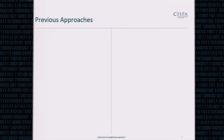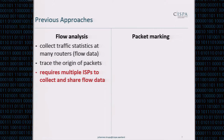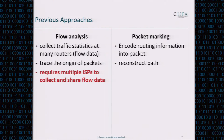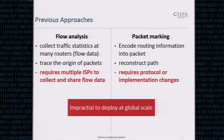There have been some previous approaches to finding the origin of spoofed traffic, falling mainly into two categories: flow analysis and packet marking. Flow analysis collects traffic statistics at many routers to trace back packet origins, but requires multiple ISPs to collaborate and share flow data, which is not happening today. Packet marking encodes routing information into packets to reconstruct the path, but requires changing fundamental protocols or router implementations, which also has not happened. Both approaches are impractical to deploy at global scale.